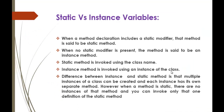The difference is that multiple instances of a class can be created, and each instance has access to its own instance methods. However, when the method is static, there are no instances of that method and you can invoke only that one definition using the class name. An instance method can be called through an object that can call multiple instance methods. Thank you, have a great day. Please subscribe to ANKPRO Training.